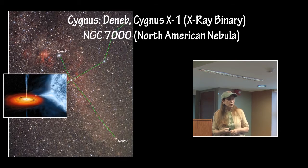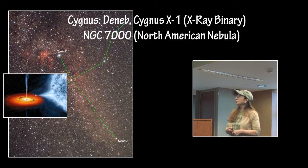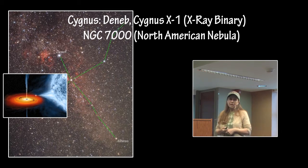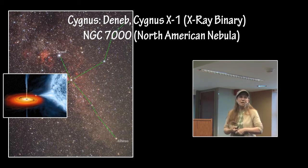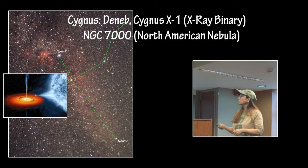Cygnus X1 was the first suspected black hole candidate, which has now been verified to be a black hole — found to be a 15 solar mass black hole with a companion star.